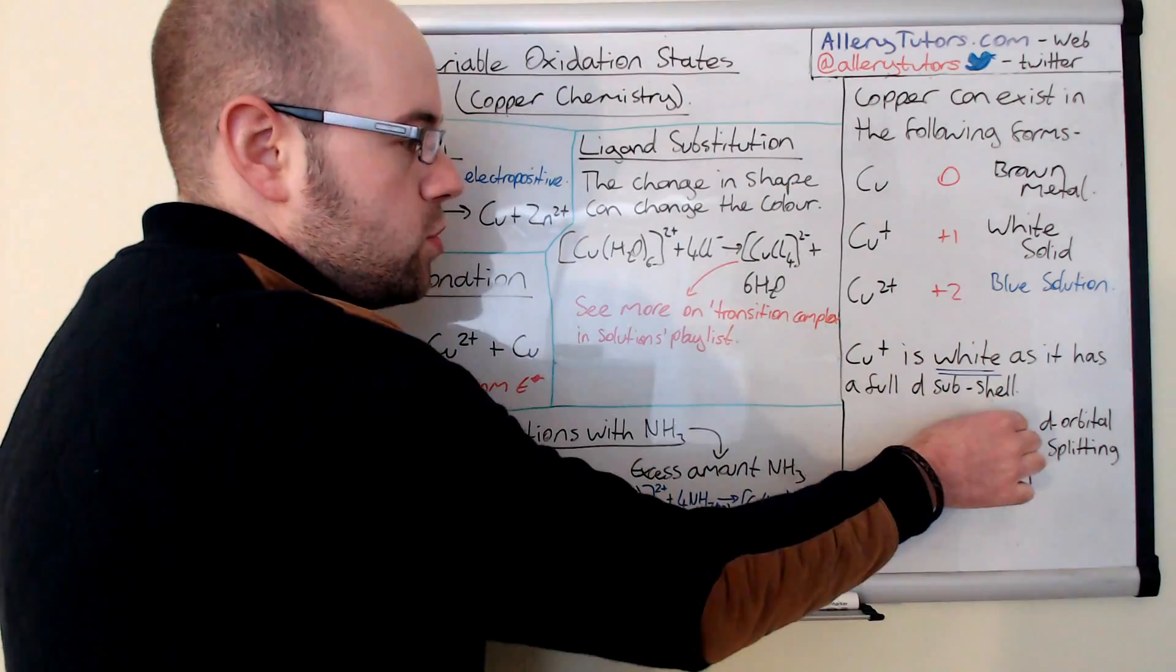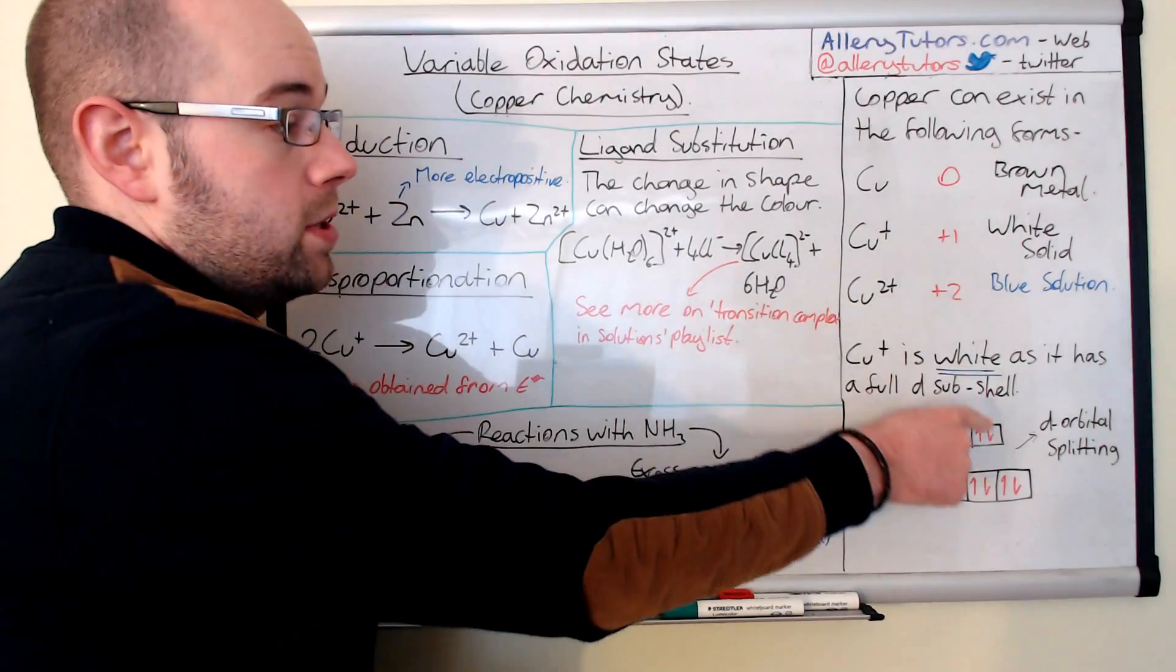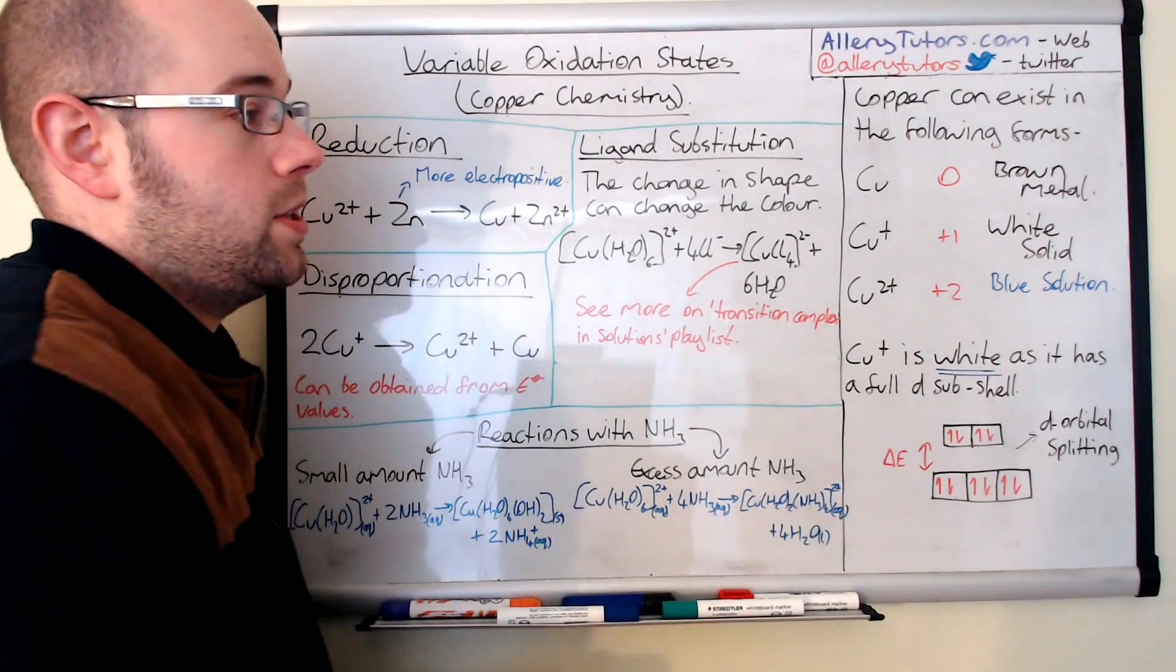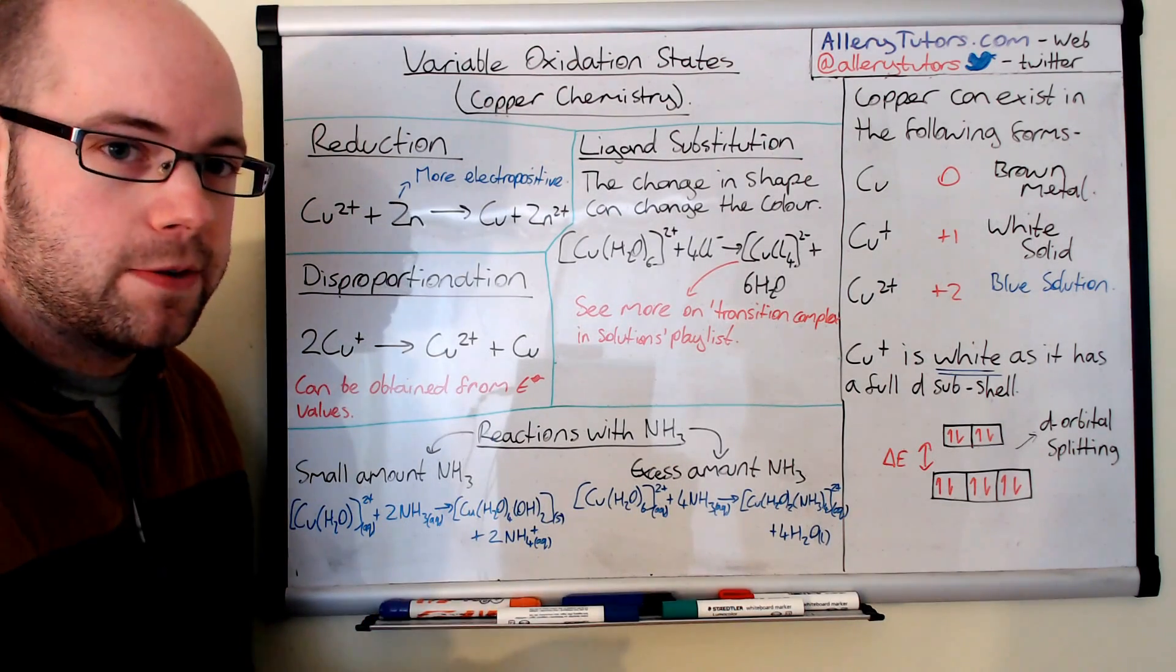That means we can't transit an electron from here up to here because this one's full as well. And because we don't have that ability to move the electrons between the two orbitals, we effectively get a color that's just white. And that's the same with any transition metal that has this setup here, whether it's full or even empty for that matter, that would give the same effect. So in this case, copper one plus is white solid.